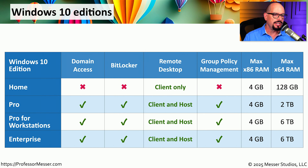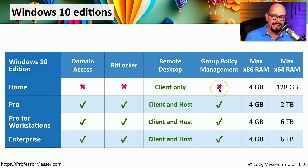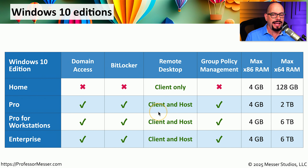The four editions of Windows 10 are Home, Pro, Pro for Workstations, and Enterprise. Windows 10 Home does not have access to a Microsoft domain, does not include BitLocker support, can only use remote desktop as a client and not as a server, and group policy management is not available. Windows 10 Pro, Pro for Workstations, and Enterprise all support domain access, BitLocker, remote desktop as both a client and a host, and group policy management.